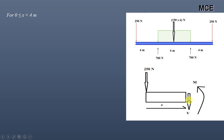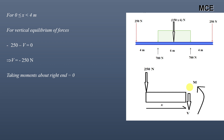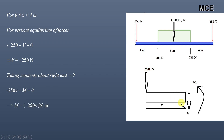In this portion, only the 250 newton load is applied. Assuming shear force acts in the downward direction and moment is anti-clockwise, for vertical equilibrium we get minus 250 minus V equals zero, giving shear force equal to minus 250 newtons. The shear force for the first portion is constant at minus 250 newtons. Taking moments about the right end equal to zero, moment of 250 newtons is minus 250x, giving M equal to minus 250x newton-meters.